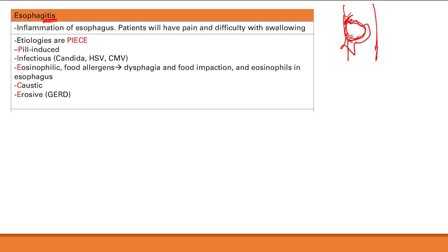I is for infectious, including Candida, HSV, and CMV. E is for eosinophilic esophagitis — a food allergen triggers an allergic reaction leading to dysphagia and food impaction, and you'll see eosinophils on biopsy. C is for caustic esophagitis from ingesting caustic substances like bleach, causing massive irritation of the esophageal tract. E is for erosive esophagitis — basically GERD, where hydrochloric acid erodes the esophageal lining and causes inflammation.